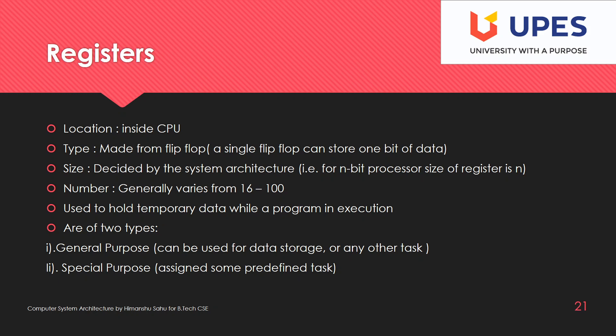Registers are of two types: general purpose and special purpose. General purpose registers can be used for data storage or any other task. Special purpose registers are assigned some predefined task. We will see these details when working on the control unit design and ALU design.